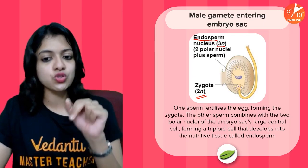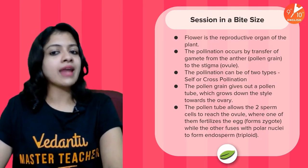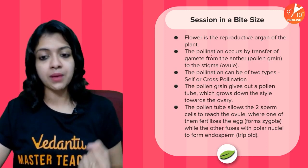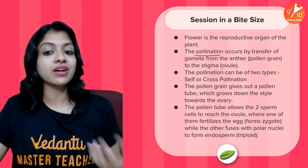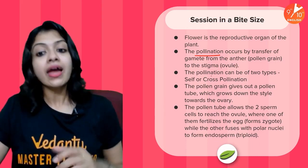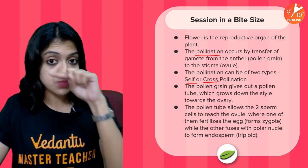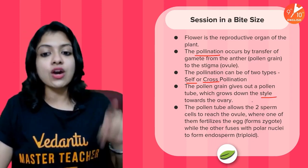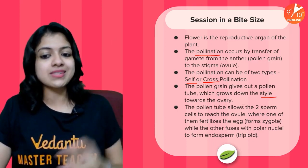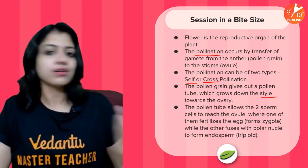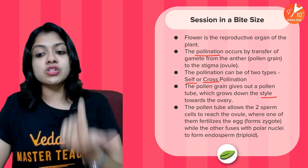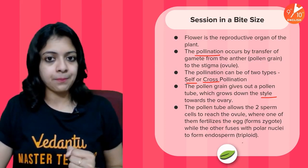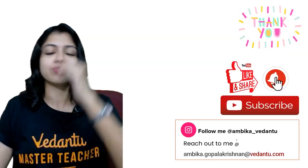To summarize in bite-size: the flower is the reproductive organ of a plant, especially in angiosperms. Pollination occurs by transfer of pollen from the anther to the stigma, and can be either self-pollination or cross-pollination. The pollen grain grows a pollen tube which travels down the style towards the ovary. The pollen tube allows two sperm cells to reach the ovule — one fertilizes the egg to form the zygote, while the other fuses with the polar nuclei to form the triploid endosperm, which nourishes the growing embryo.